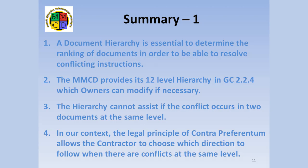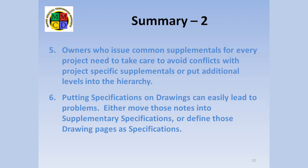Let me summarize the points I've made in this video. 1. A document hierarchy is essential to determine the ranking of documents in order to resolve conflicting instructions. 2. The MMCD provides its 12-level hierarchy in GC 2.2.4, which owners can modify if necessary. 3. The document hierarchy cannot assist if the conflict occurs in two documents at the same level. 4. The legal principle of contra preferentum allows the contractor to choose which direction to follow when there are conflicts at the same level. 5. Owners who issue common supplementals for every project need to take care to avoid conflicts with project-specific supplementals, or put additional levels into the hierarchy. 6. Putting specifications on drawings can easily lead to problems — either move those notes into supplementary specifications or define those drawing pages as specifications.